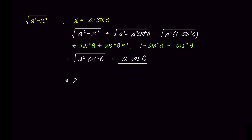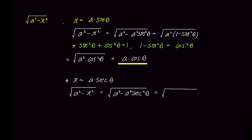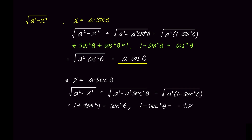What would happen if we substitute x with a secant theta? The square root of a squared minus x squared would become the square root of a squared minus a squared times secant squared theta. Factoring out a squared gives a squared times 1 minus secant squared theta. Using the identity 1 plus tangent squared theta equals secant squared theta, rearranging gives 1 minus secant squared theta equals negative tangent squared theta. This means the value inside the square root becomes negative and thus not possible.